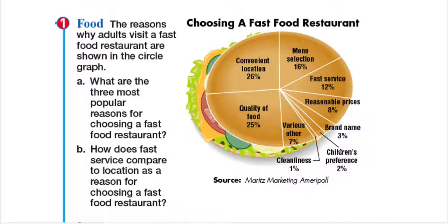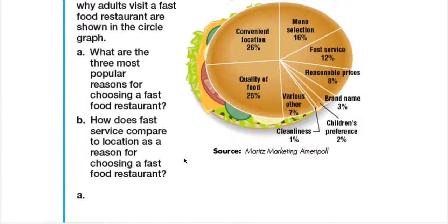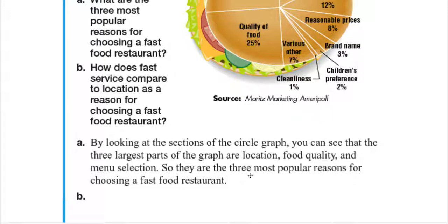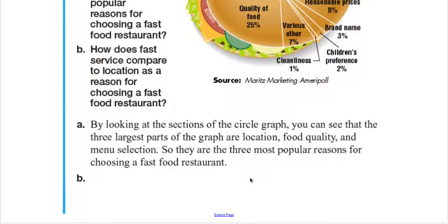Various other reasons total 7%, including cleanliness, children's preference, and brand name. By looking at this circle graph, what are the three most popular reasons for choosing a fast-food restaurant? By looking at the sections of the circle graph, you can see the three largest parts are location, food quality, and menu selection — so those are the three most popular reasons.